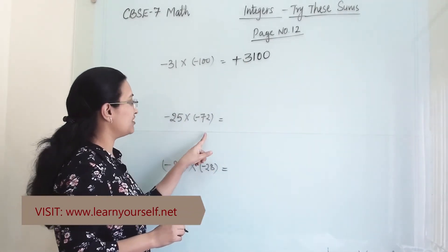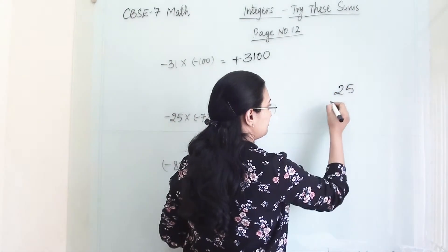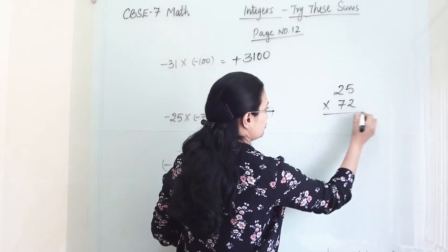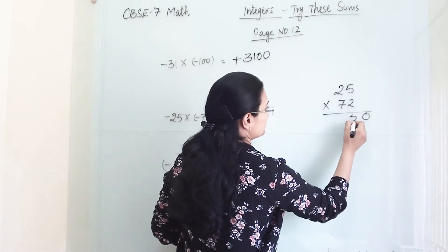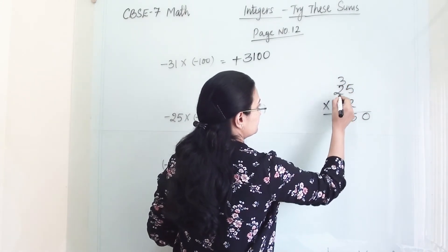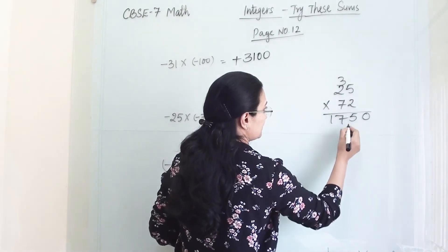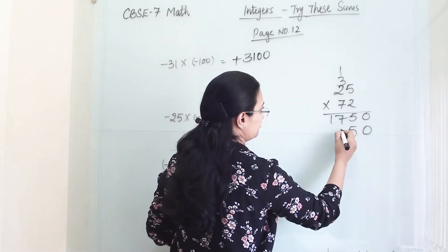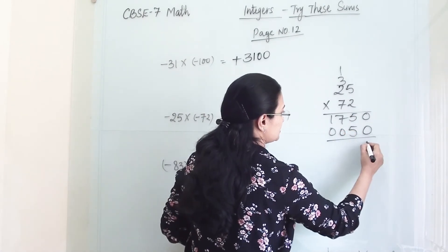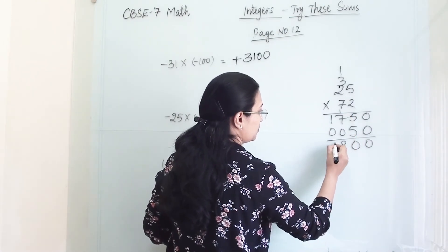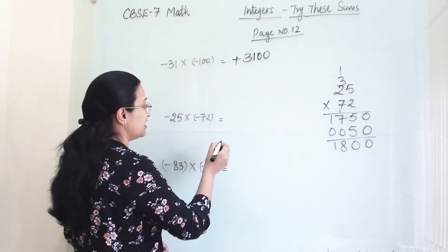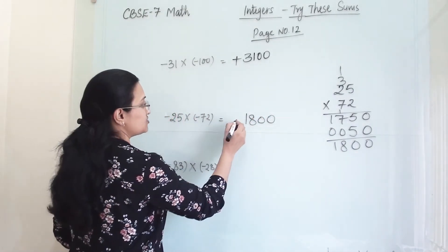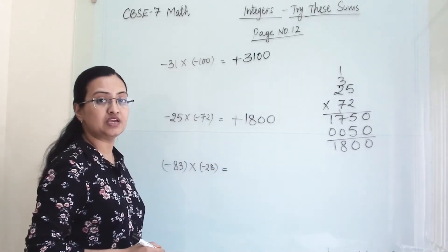Next, (-25) × (-72). First we do simple multiplication: 25 × 72. The answer is 1800. And minus × minus becomes plus, so our answer will be +1800.